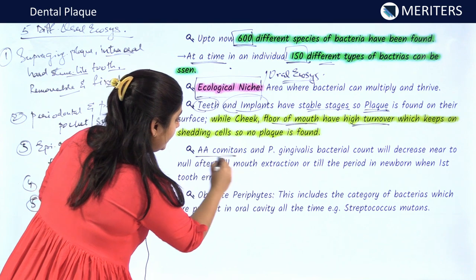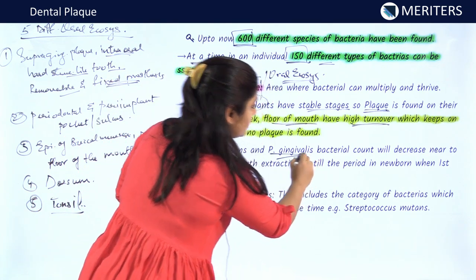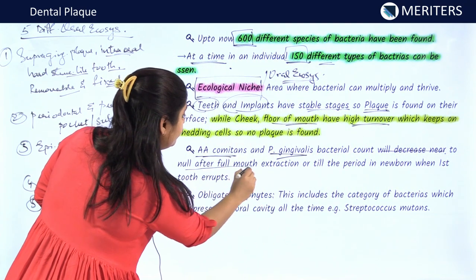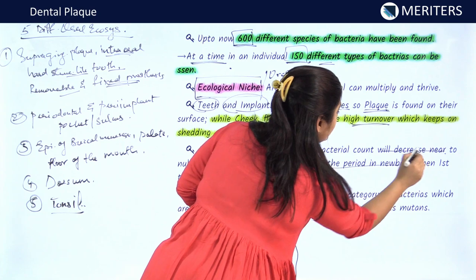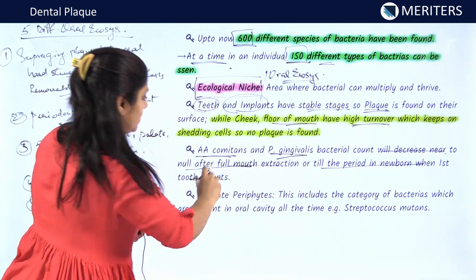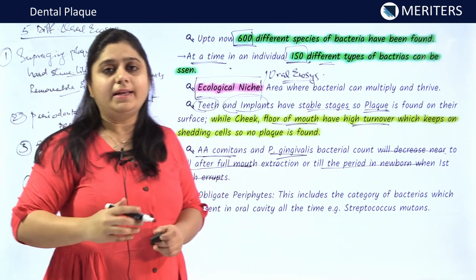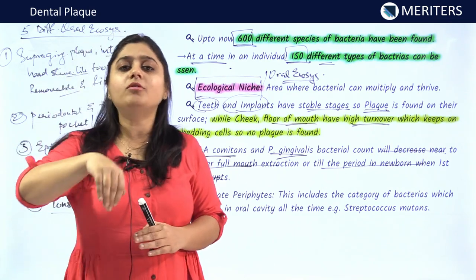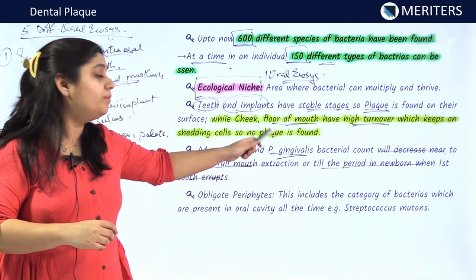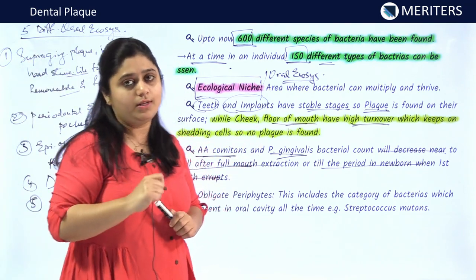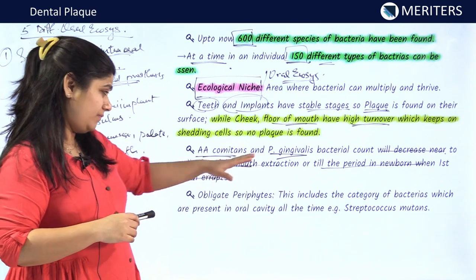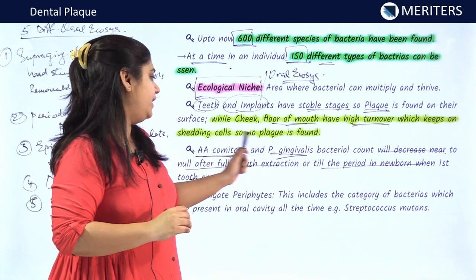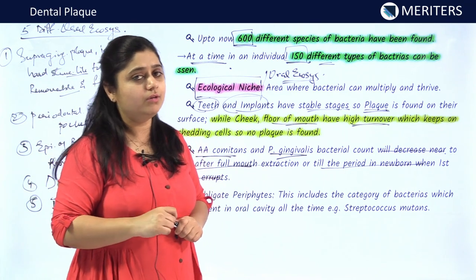Bacteria like AA and P. gingivalis bacterial count will decrease to near null after full-mouth extraction, or until the period when the first tooth erupts. AA and P. gingivalis are bacteria found only on hard structures like the tooth. Whenever full-mouth extraction is done, no AA or P. gingivalis can be detected in the oral cavity. Similarly, until the first tooth erupts, no AA or P. gingivalis can be determined in the oral cavity.